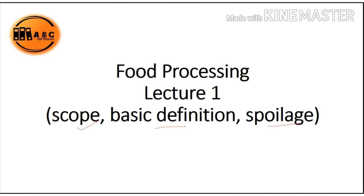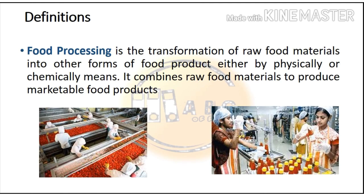Let us start our lecture with the definition of food processing. It is the transformation of raw food materials into other forms of food product, either by physical or chemical means. It combines raw food materials to produce marketable food products. Here, raw food materials means any agriculture product, any dairy product, or any meat or poultry product.